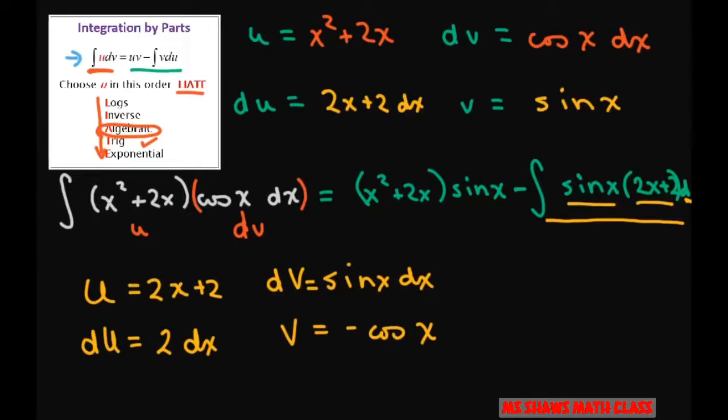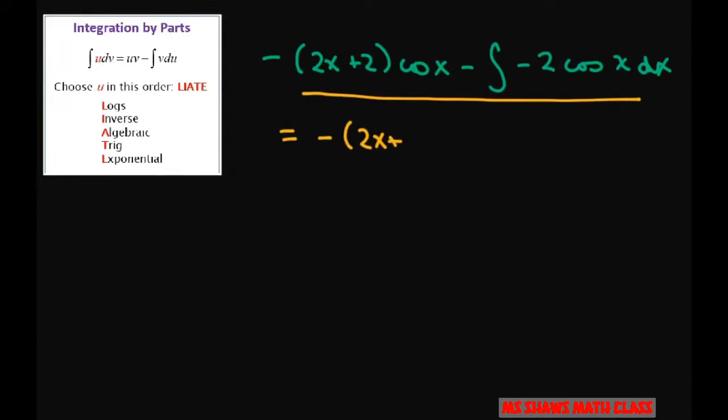When you fill that out, you get negative (2x plus 2) cosine x minus the integral of negative 2 cosine x dx. This simplifies to negative (2x plus 2) cosine x, and the integral becomes positive.